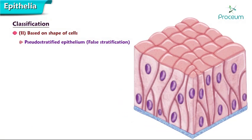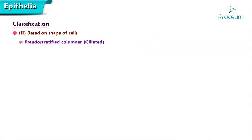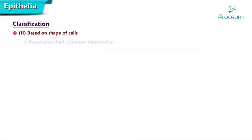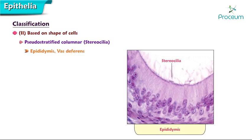Pseudostratified epithelia give the appearance of having multiple cell layers but are composed of a single cell layer only, as evidenced by the fact that all cells are in contact with the basal lamina. Pseudostratified columnar ciliated epithelium occurs in the nasal cavity, trachea, and bronchi; functions are transport, protection, and secretion. Pseudostratified columnar with stereocilia occurs in the epididymis and vas deferens; functions are protection, secretion, and absorption.